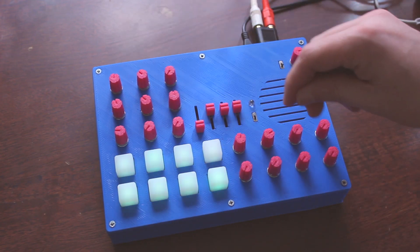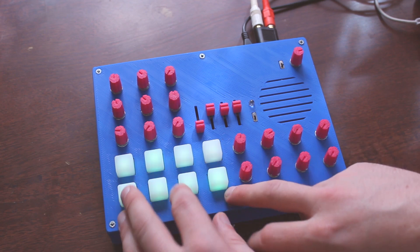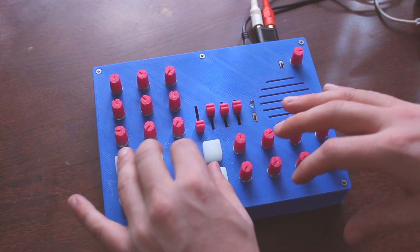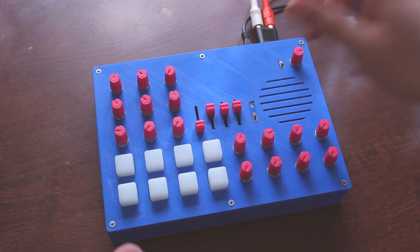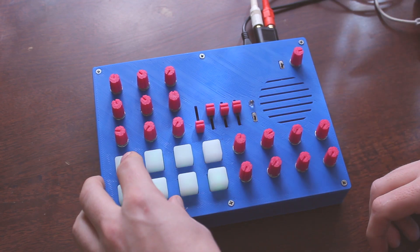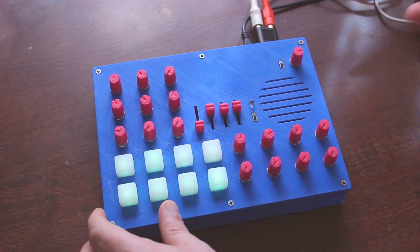All right, so let's go over all of the functions really quick. We have eight-note polyphony. You can get all of them going at once. And each note has essentially two voices and noise.